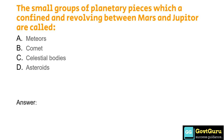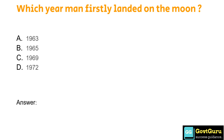The small groups of planetary pieces which are confined and revolving between Mars and Jupiter are called: Option A: Meteors, Option B: Comet, Option C: Cholesterol Bodies, Option D: Asteroids. The answer is Option D, Asteroids. Which year did man first land on the moon? Option A: 1963, Option B: 1965, Option C: 1969, Option D: 1972. The answer is Option C, 1969.